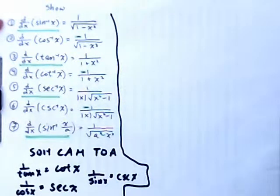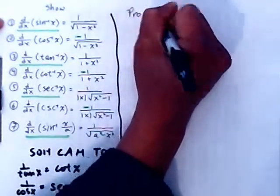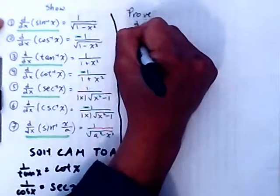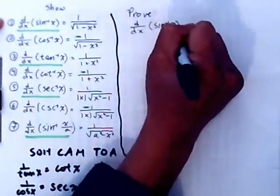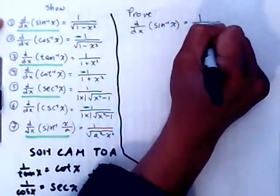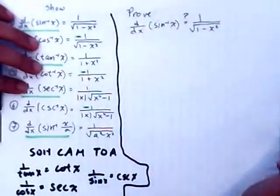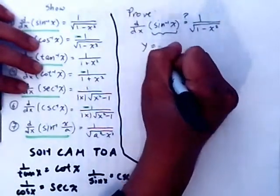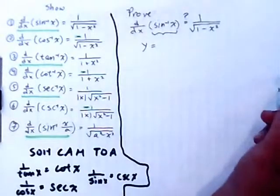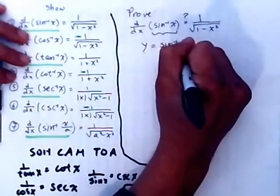Let's prove the first one. Prove: the derivative with respect to x of the sine inverse of x is equal to 1 over the square root of 1 minus x squared. The first thing we're going to do is set this as y. Y is equal to the sine inverse of x.